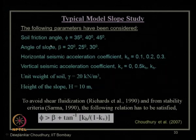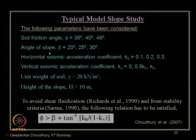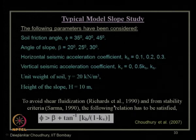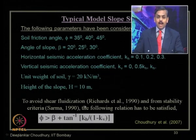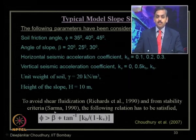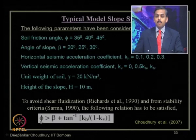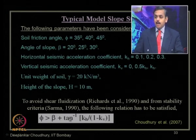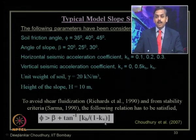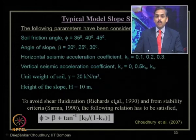A parametric study was conducted for soil friction angles of 35°, 40°, and 45° with various slope angles. As proposed by Richards et al. in 1990, to avoid the phenomenon of shear fluidization, and from the stability point of view per Sharma 1990, the soil friction angle φ must be greater than β (slope angle) plus tan⁻¹(KH / (1 − KV)).